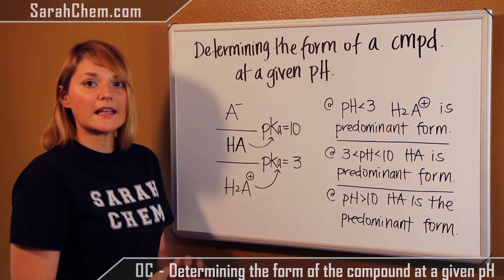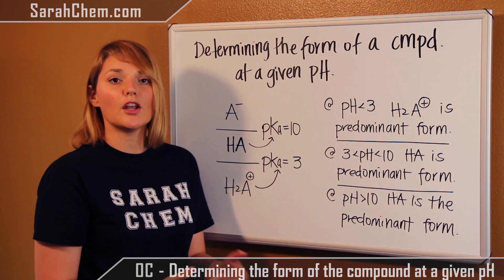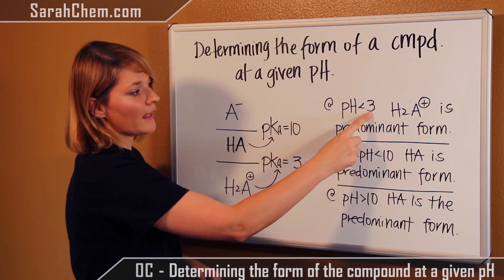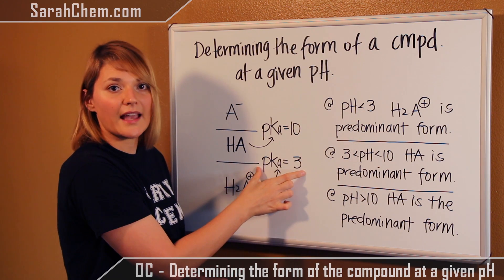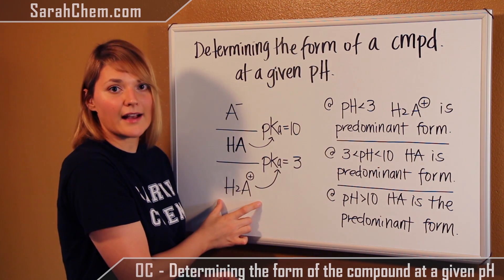This table makes things really easy, because based on these pKa's and the pH you're given, you can tell which species you'll have. So, if you have a pH that's less than 3, or lower than whatever the lowest pKa is that you have, then you'll know you'll primarily have the conjugate acid in solution.